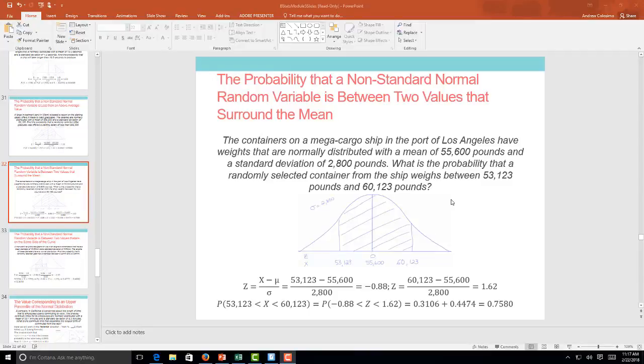All right guys, here's example number three. You'll get an example of every type of math that you should be able to do here. The containers on a mega cargo ship in the port of Los Angeles have weights that are normally distributed with a mean of 55,600 pounds and a standard deviation of 2,800 pounds. What is the probability that a randomly selected container from a ship weighs between 53,123 pounds and 60,123 pounds?